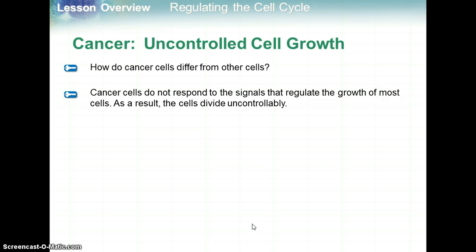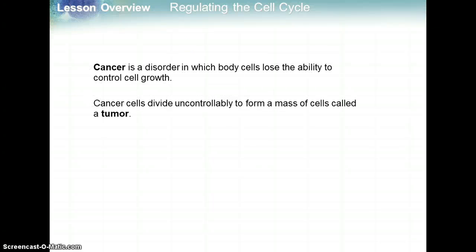Regarding how this relates to cancer: cancer is uncontrolled cell growth. Cancer cells are cells that do not respond to signals that regulate the growth of most cells. As a result, the cells divide uncontrollably — they don't undergo apoptosis when they should. Cancer is a disorder in which body cells lose the ability to control cell growth. Cancer cells divide uncontrollably to form a mass of cells called a tumor.